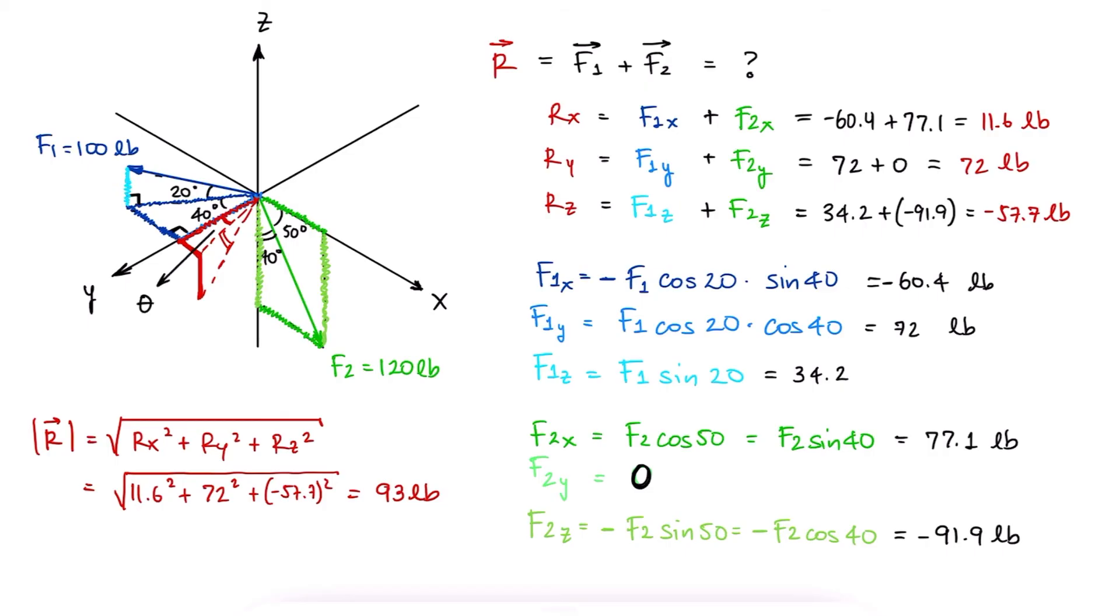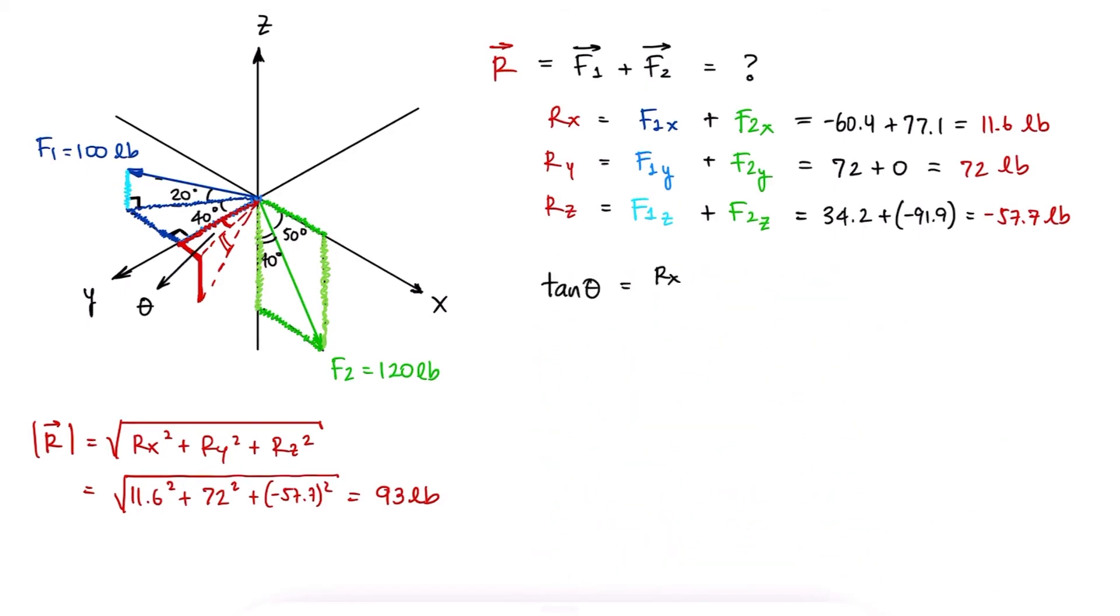By locating those components graphically, we see that angle theta can be found with the inverse of tangent and the x and y components. Rx is the side opposite to theta, and Ry is the adjacent side to theta. Substituting the values, we find the angle theta.